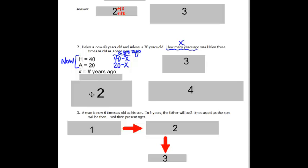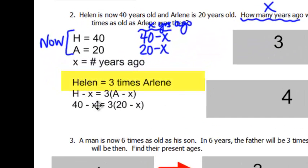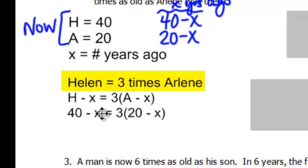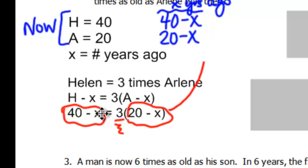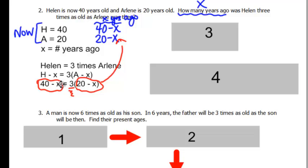Now what I want is I want Helen's age to be three times as Arlene's x years ago. So I want Helen's age to be three times, this is Helen's age x years ago, to be three times as Arlene's age x years ago. Looking right back up here, okay? Then go ahead and solve our equation.